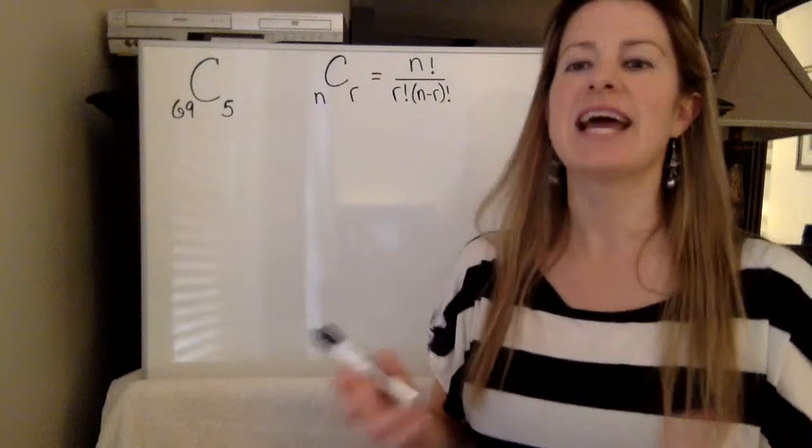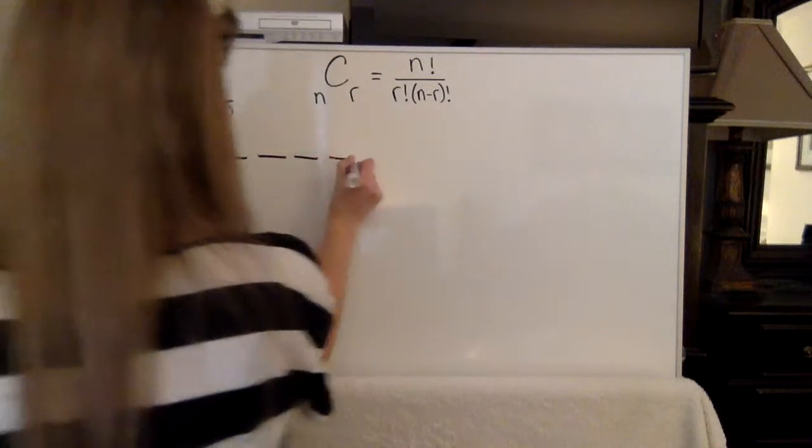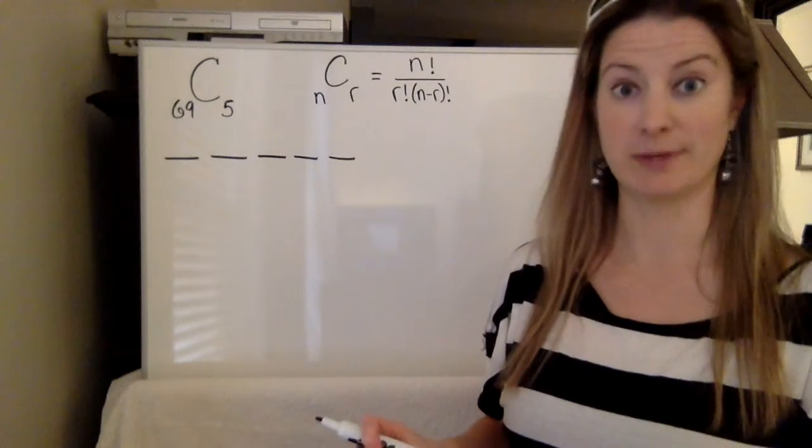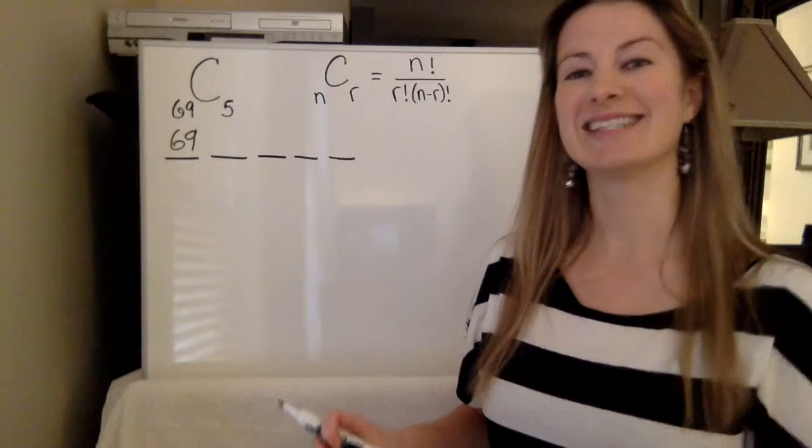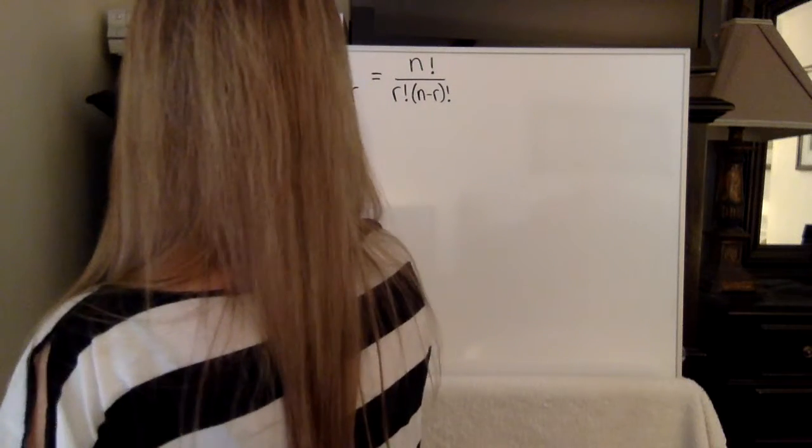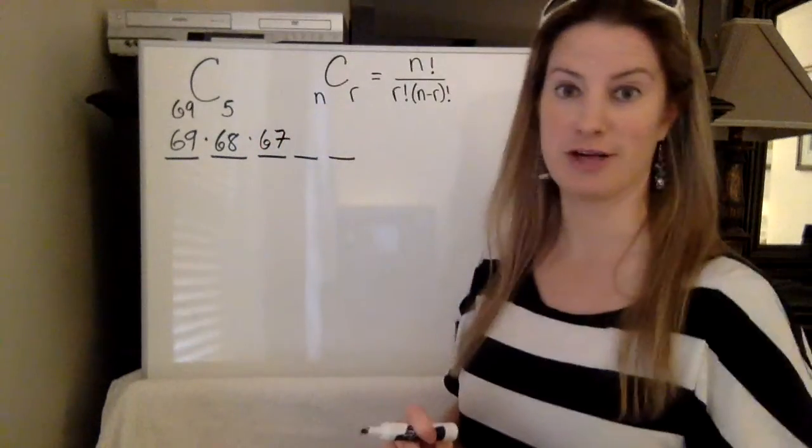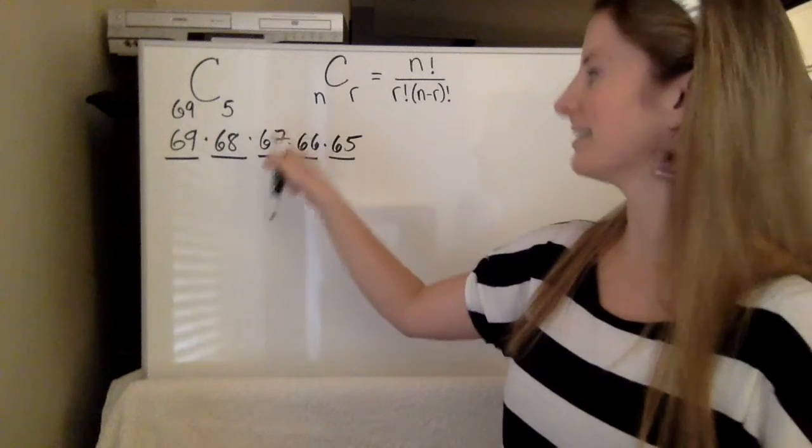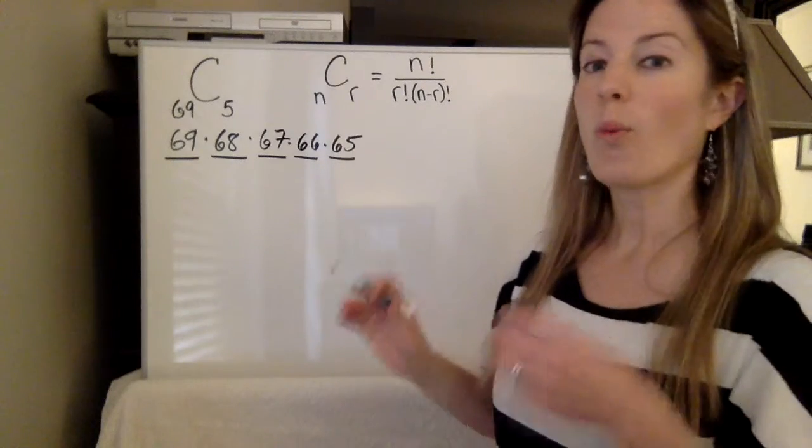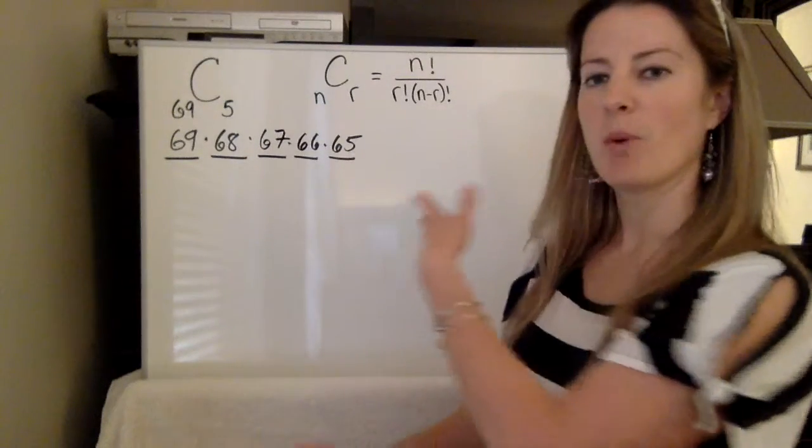Think about it. You have 69 numbers to choose from and you're choosing 5. So if we think about it as slots and there's no replacement, so we pick the first number. There are 69 ways to pick that first number. Well, once we remove that number there's only 68 ways to pick the next number. And once we remove that number there's only 67 ways to pick the third number and then 66 and then 65. So 69 times 68 times 67 times 66 times 65. Well wait a second though. If you look back, you remember that it was all over 5 factorial. So why is that happening? I get this part, but why is that happening?